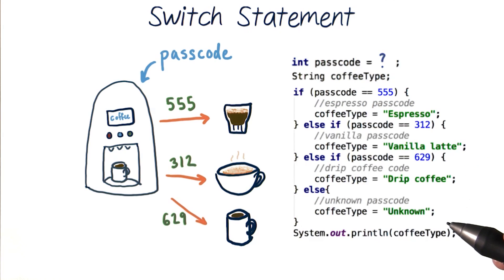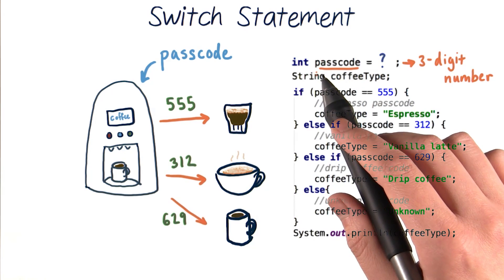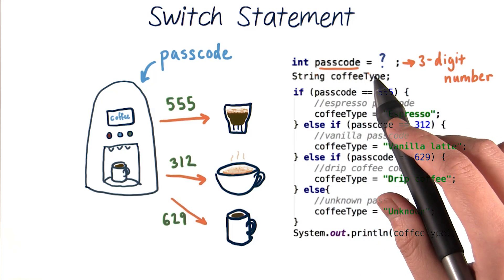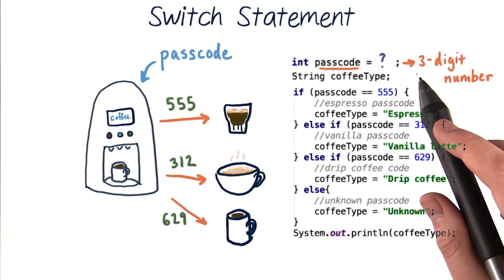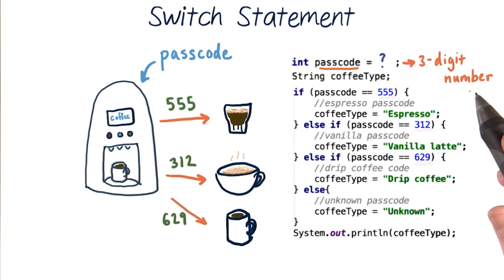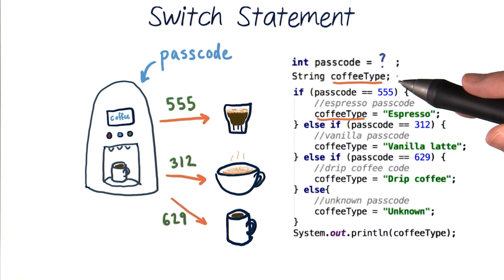We can program this behavior using a series of decision-making statements. Let's say we have access to our int passcode variable, but we aren't sure what value it will be. We just know that it will be some three-digit number. We can then write an if statement and else ifs with test conditions that check if our passcode is equal to a certain value, like 555 or 312. And then inside each statement, we'll assign what type of coffee to make based on the value of passcode. And the type of coffee is kept track of in a string variable coffeeType.